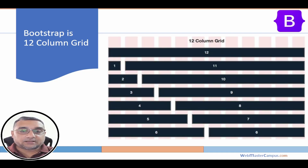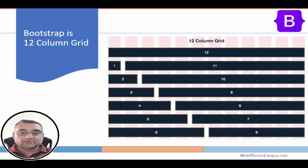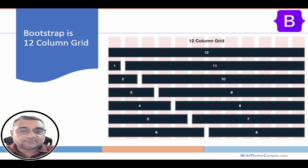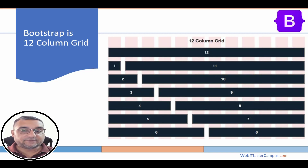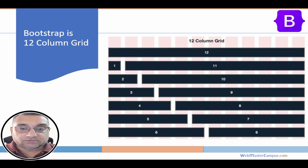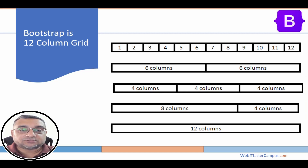Here's the idea of the 12-column grid: Bootstrap is built on a 12-column grid. There can be a single column or various divisions — for example, 1 and 11, 2 and 10, 3 and 9, 4 and 8, 5 and 7. You can also equally divide the page into six-by-six columns. These are the column distributions you can do within a row.